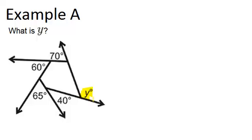Now, Y is an exterior angle because it is on the outside of our inner polygon here. And what we should notice is that we've been given four other exterior angles for this polygon.